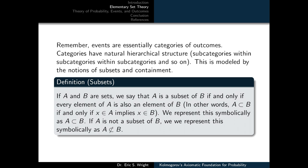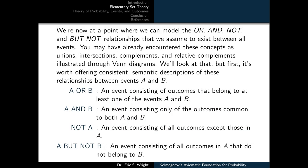Events are essentially categories of outcomes. Categories have a natural hierarchical structure — subcategories within subcategories — and this is modeled by the notions of subsets and containment. We're now at a point where we can model the OR, AND, NOT, and BUT NOT relationships between events. You may have already encountered these concepts as unions, intersections, complements, and relative complements illustrated through Venn diagrams.